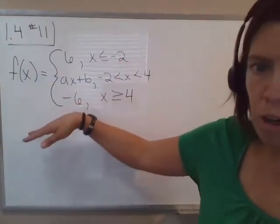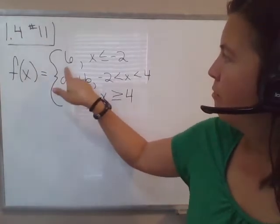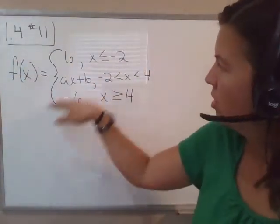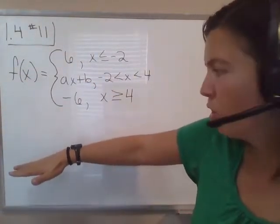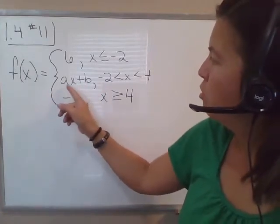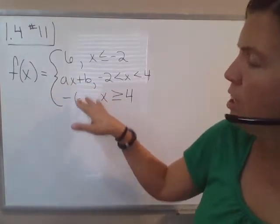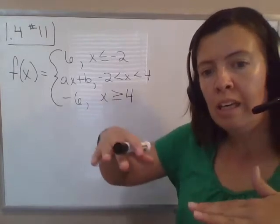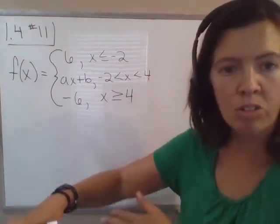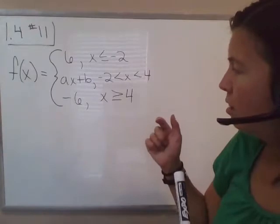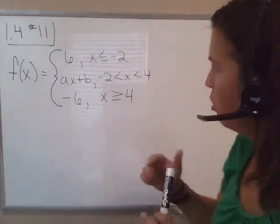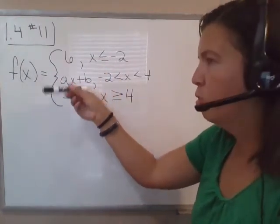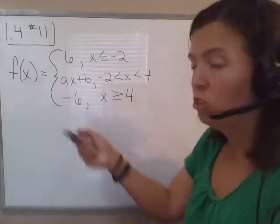Notice independently these would all be continuous functions. f of x equals 6 — the graph would just be a horizontal line y equals 6. f of x equals negative 6 — same deal, just a horizontal line down at negative 6. Whatever the values are for a and b, this is also a linear expression, so that graph would also be a line. So individually each piece is a line, which would be continuous at all values of x. The problem is when you change from one piece to another — there could be a jump in that graph.